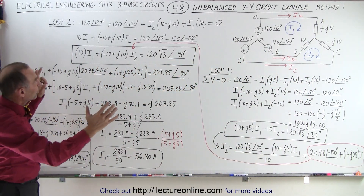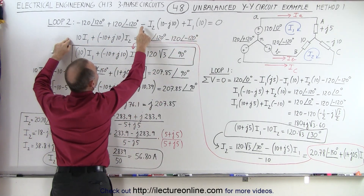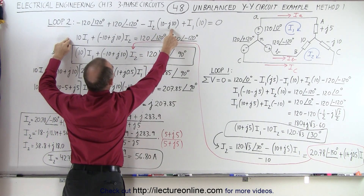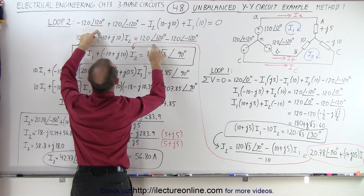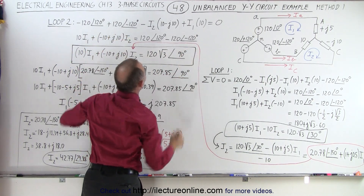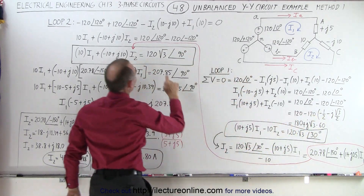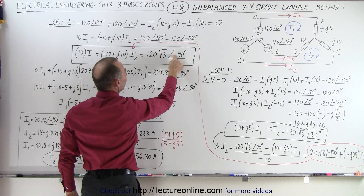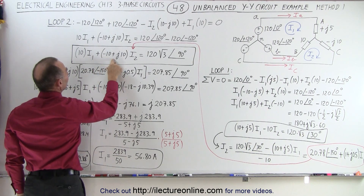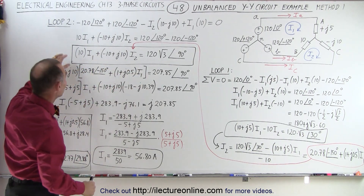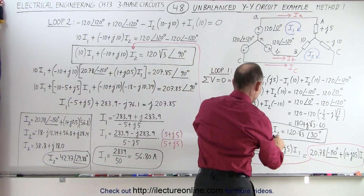Now we collect the terms together. We have 10 times I1, and applying the negative sign gives I2 times negative 10 plus J10. Moving the voltage components to the other side gives plus 120 at a 120 degree phase angle and minus 120 at a minus 120 degree phase angle. Collecting those terms, this ends up being 120 times the square root of 3 at a phase angle of 90 degrees. On the left side we have 10I1 plus (minus 10 plus J10) times I2. So now we have two equations and two unknowns — I1 and I2 in each.